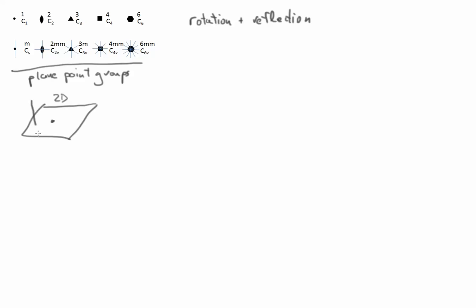All of these rotation axes are perpendicular to the plane. For example, a three-fold rotation axis rotates a point 120 degrees, then another 120 degrees, and back onto itself. The first five plane point groups are just those allowable rotation axes: C1, which is a two-pi rotation rotating an object back onto itself — sometimes called a trivial symmetry operation — and also C2, C3, C4, and C6.